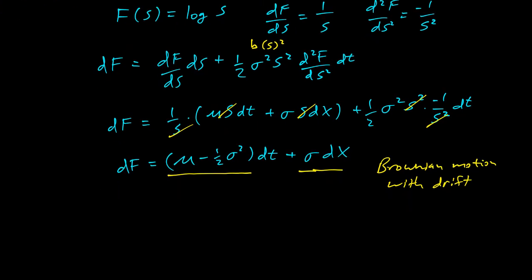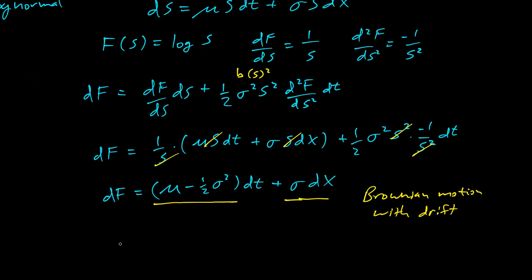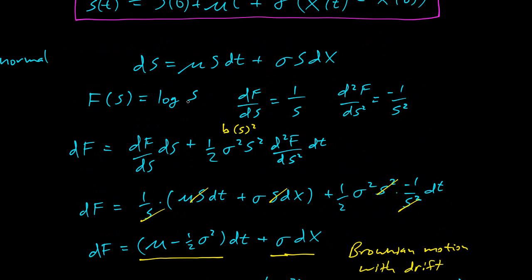So that's cool. We have the answer to this. The answer was s(t) equals s(0) plus μt, and then the difference of the random variable here. So now the solution down here will be f(t) equals f(0) plus μ, which in this case is really μ minus a half σ², times t plus σ times x(t) minus x(0).